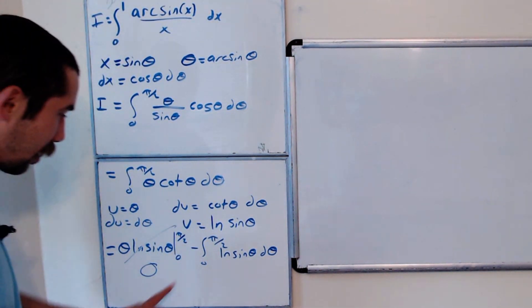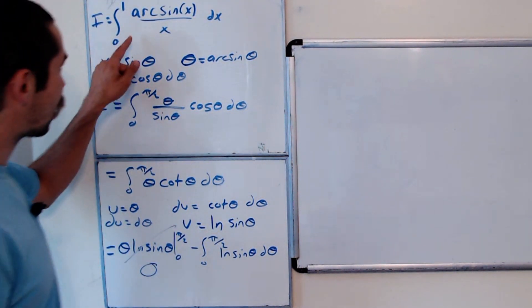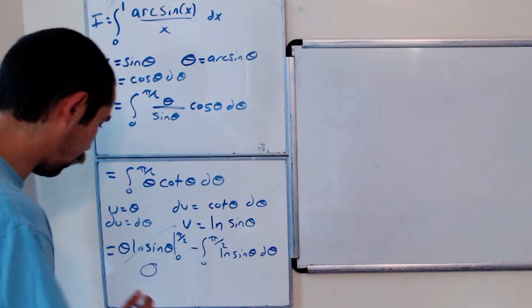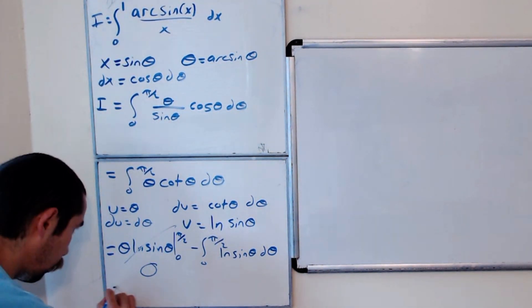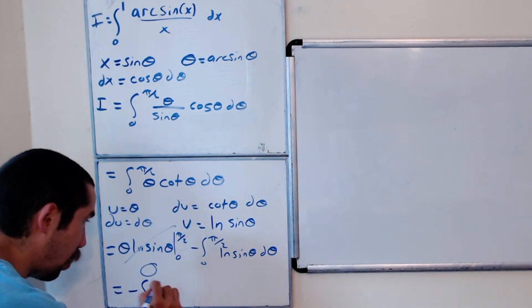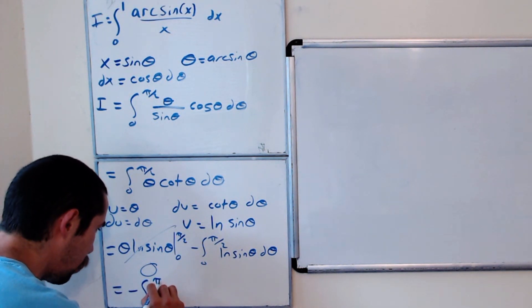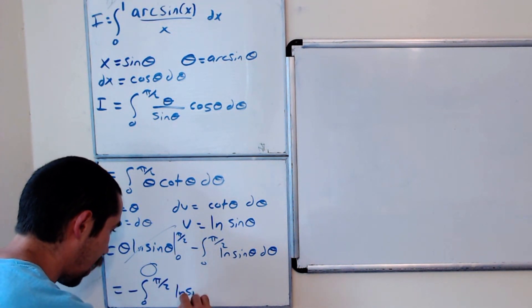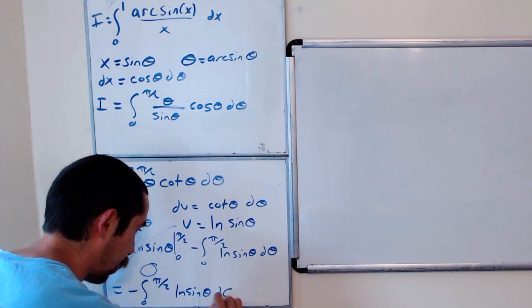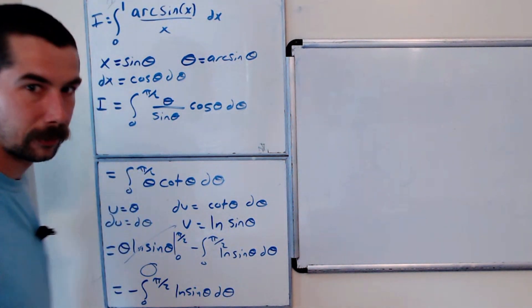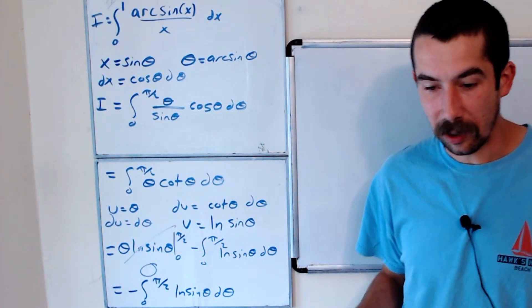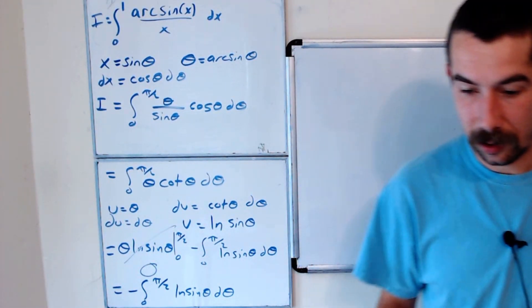So what are we left with? Our integral I is equal to negative the integral from 0 to pi over 2 of ln of sine theta d theta.